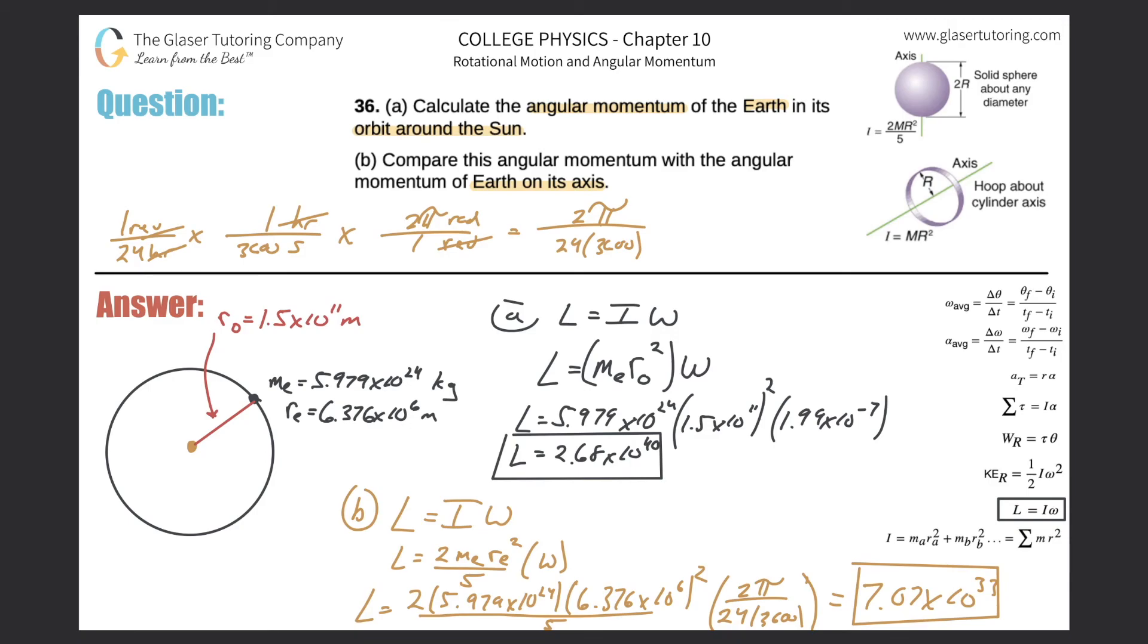And now, just as a little challenge. So this is the value that we found of the angular momentum of Earth, and it said to compare it to the angular momentum of the Earth around the Sun. So all you have to do is a division now, a simple ratio. Take this value, 2.68 times 10 to the 40th, divide it by 7.07 times 10 to the 33rd, and you'll find out how many times larger the angular momentum is of the Earth around the Sun than the Earth on its own axis. This is approximately 3.79 times 10 to the 6.